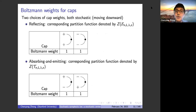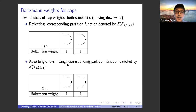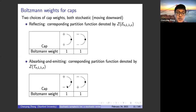Now I introduce the Boltzmann weights for the caps. There are two types of cap weights, both stochastic. The top boundary is the input and the bottom boundary is the output. In the reflecting case, a plus spin outputs as plus and a minus spin outputs as minus — this is deterministic. In the absorbing and emitting case, a plus spin changes to minus after the cap, and a minus changes to plus. These names relate to the particle system interpretation.